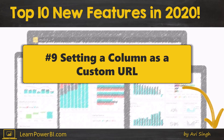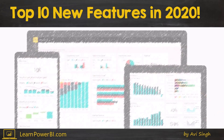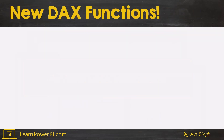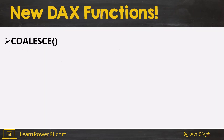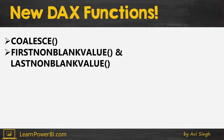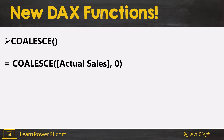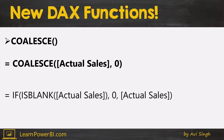Number 8 is new DAX functions — it's always a party when new DAX functions get introduced! This time we have three: COALESCE, FIRSTNONBLANKVALUE, and LASTNONBLANKVALUE. COALESCE will be familiar to those from a SQL background — it's a more elegant way to handle blank checks. You can say COALESCE(actual sales, rejected sales, 0): if the first is non-blank, show that, else move on.